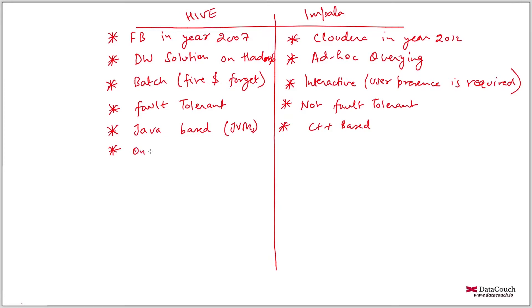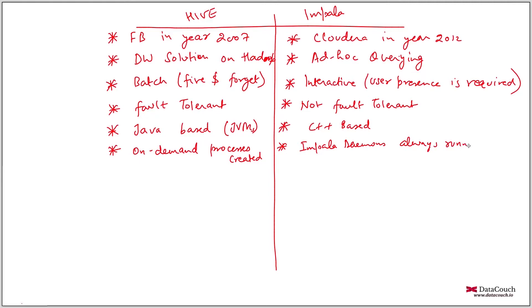In Hive, when you run a query, JVM processes are created on demand. In Impala, there are Impala daemons which are always running. Additionally, UDFs in Hive are primarily written in Java, but in Impala, C++ UDFs are also supported in addition to Java.